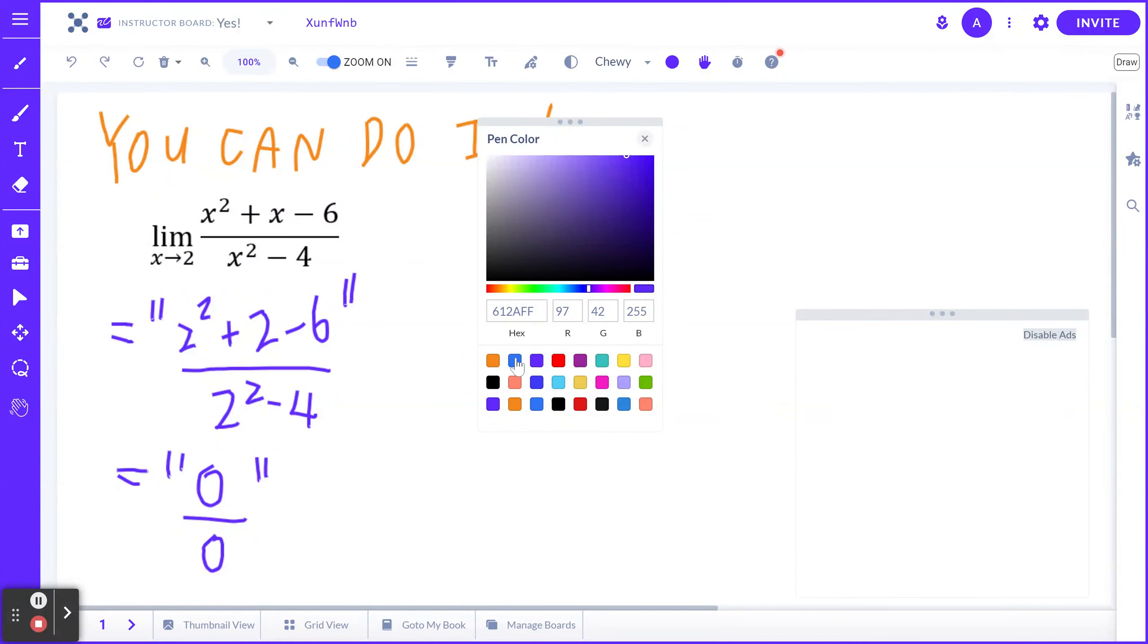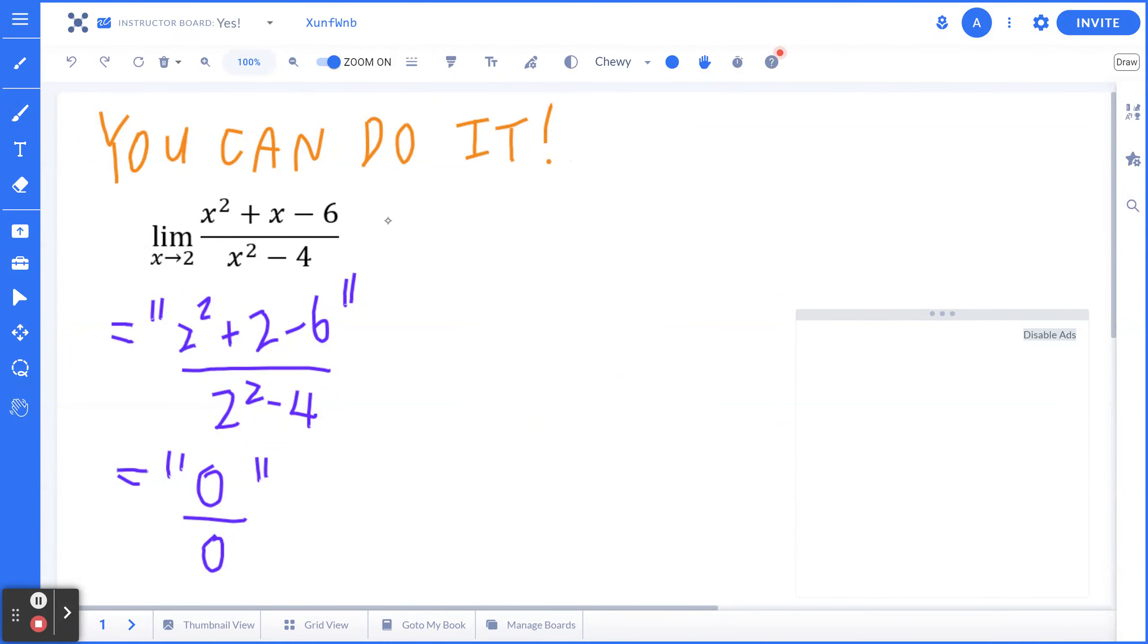So you move forward to step number 2. And step number 2 typically is what I call factoring. And depending on the function, there are different techniques. So in this case, when you look at the denominator, x squared minus 4, you can go straight to the difference of squares, which is basically x minus 2 times x plus 2.